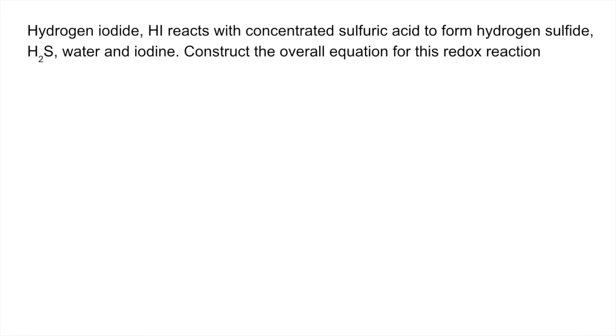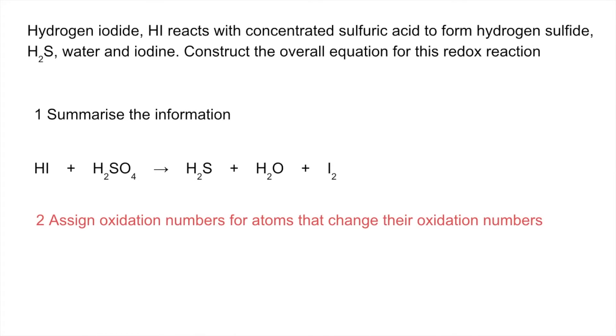So here's the second one, so if you want to pause the video and have a go at that one. So step one, summarising the information, we get that. Step two, assign oxidation numbers for atoms that change. So we've got negative one in the I in HI going to zero in the element, plus six in the sulphuric acid S going to minus two in H2S.